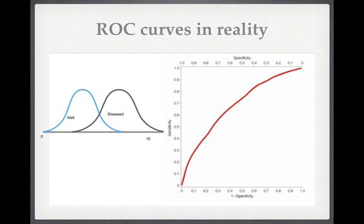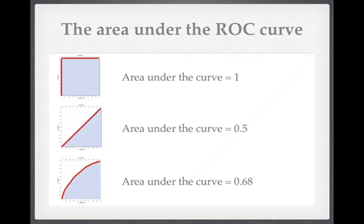In reality, tests lie somewhere between the perfect test and the really bad test. Here is an ROC curve taken from a paper looking at PSA — prostate specific antigen — for diagnosing prostate cancer. You can see it lies somewhere between the diagonal of a really bad test and the right-angle corner of the perfect test. The question arises: how can we quantify how good a test is, or compare two different tests?